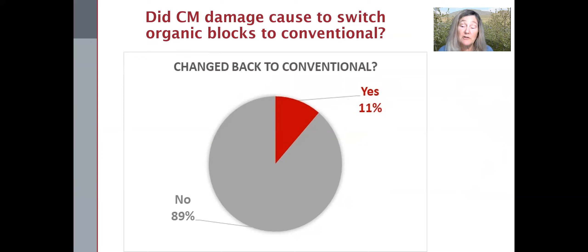There may be some other factors at play here, like the cost of organic controls and the price of organic fruit. But regardless, only 11% of the survey respondents said they had changed an organic block back to conventional because of codling moth.